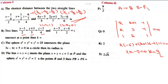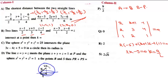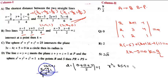A sphere intersects a plane in a circle. The radius of the sphere is 5 units. We find the perpendicular distance from the center (origin) to the plane: distance = 5/√25·... = 1. Using Pythagoras: r² = 25 − 1 = 24, so r = 2√6. Option C matches with S.